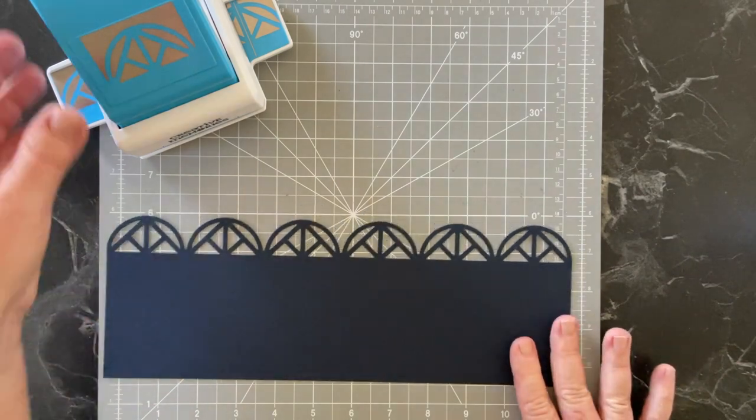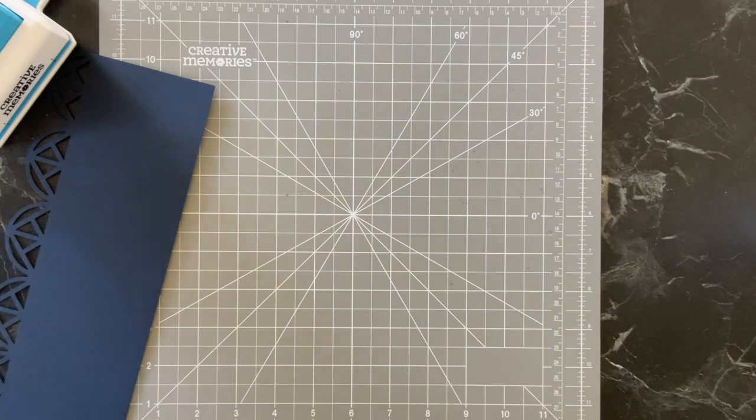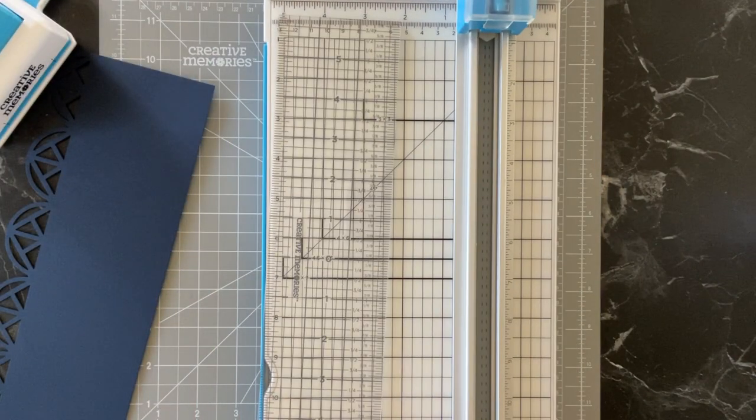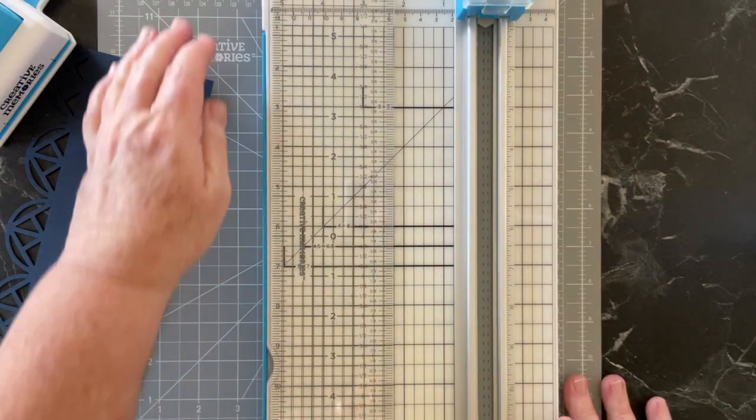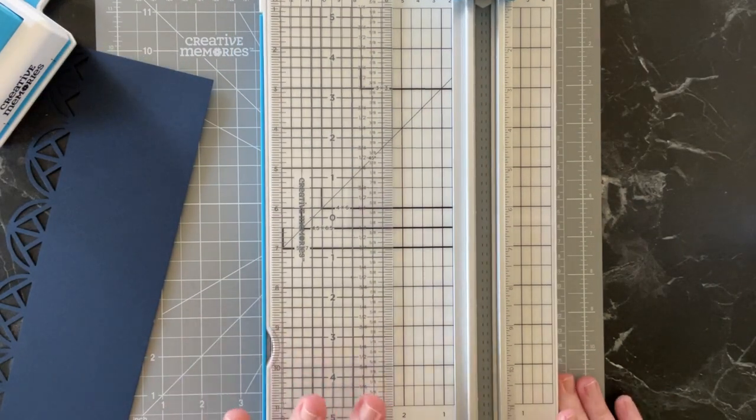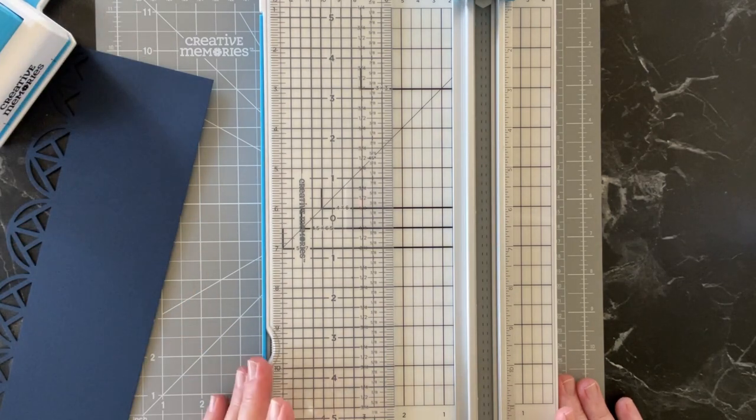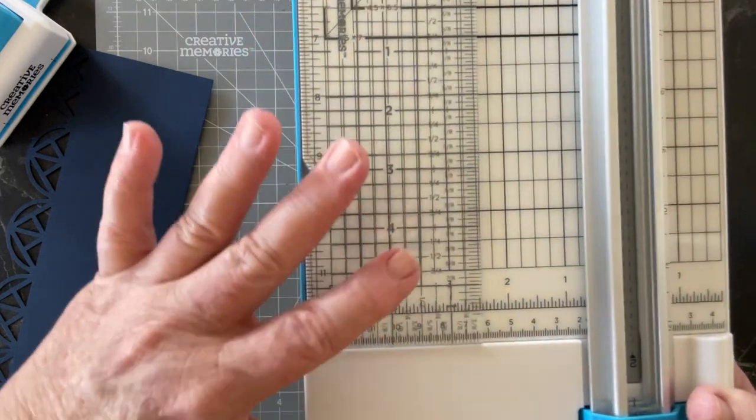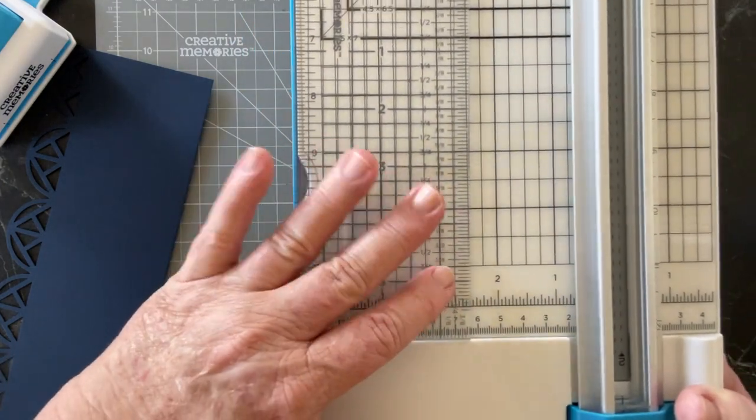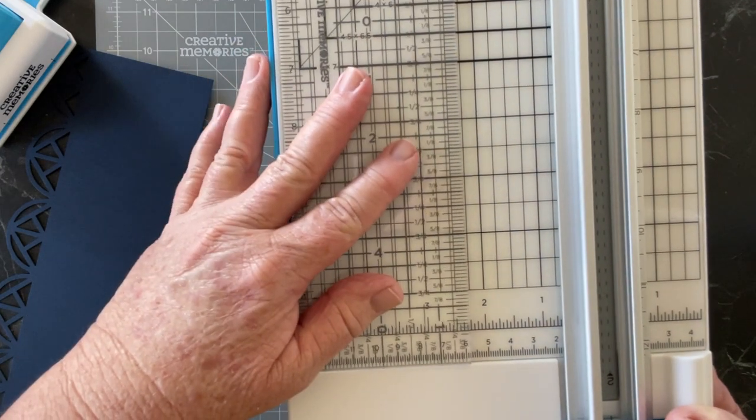The next step that you need to do is to get out your 12 inch trimmer to find the width that we want to cut it at. Today I'm going to be cutting at 2 3/16ths. So if you're looking at your 12 inch trimmer, you have your 2 and then you have your quarter mark.